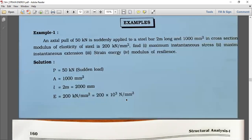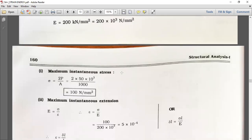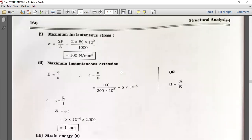First, maximum instantaneous stress. The stress equation for maximum sigma is equal to 2P upon A. Put the values of P and A into this equation, we get 100 newton per mm square.